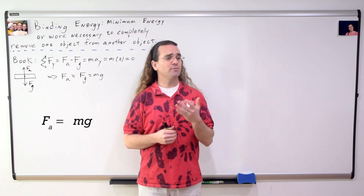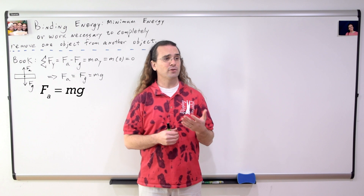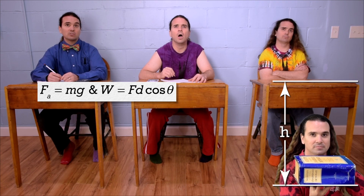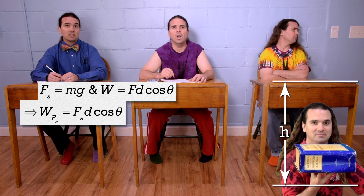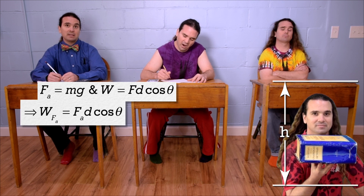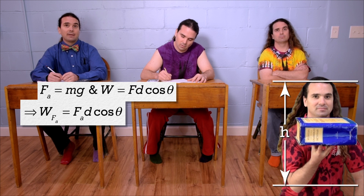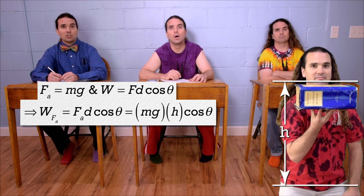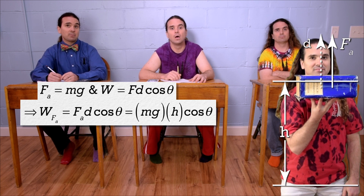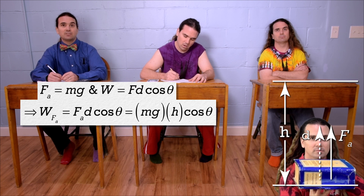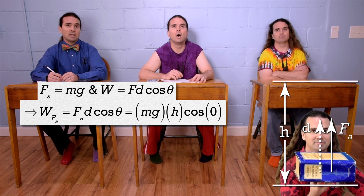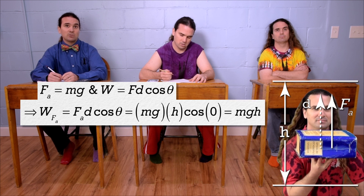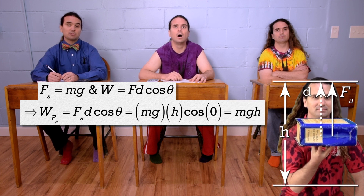Billy, please determine the work done by the force applied on the book while the book goes through a vertical displacement h. Work equals force times displacement times the cosine of the angle between the two vectors. The work done by the force applied equals force applied times displacement times cosine theta. Force applied equals mass times acceleration due to gravity. Displacement equals h. The angle between the direction of the force applied, which is up, and the displacement, which is also up, is zero. The cosine of zero is one. So, the work done by the force applied on the book equals mass times acceleration due to gravity times h, the vertical displacement of the book.